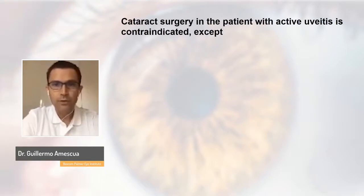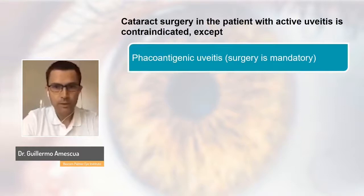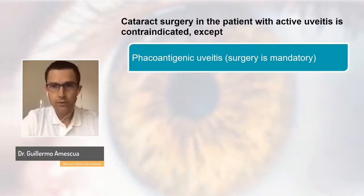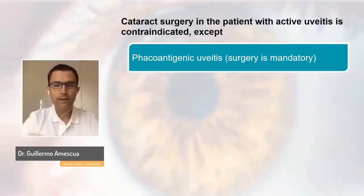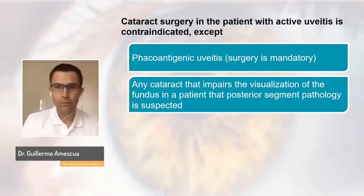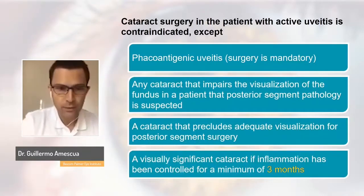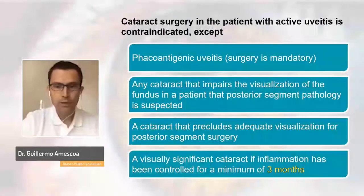For those who don't see many uveitis patients, if you're going to do this surgery, you want to control the inflammation first. However, there are certain times you can proceed — for example, in phacoantigenic uveitis where surgery itself treats the inflammation, or when visualization of the fundus is mandatory, such as in a patient with an oncological problem causing inflammation or when the posterior segment view is needed to reach a diagnosis.